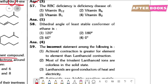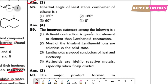Question number 57. RBC deficiency — which vitamin deficiency disease is this? RBC deficiency is called Pernicious Anemia. Pernicious Anemia occurs due to vitamin B12, which is also known as cyanocobalamin. So the correct option is option 1.